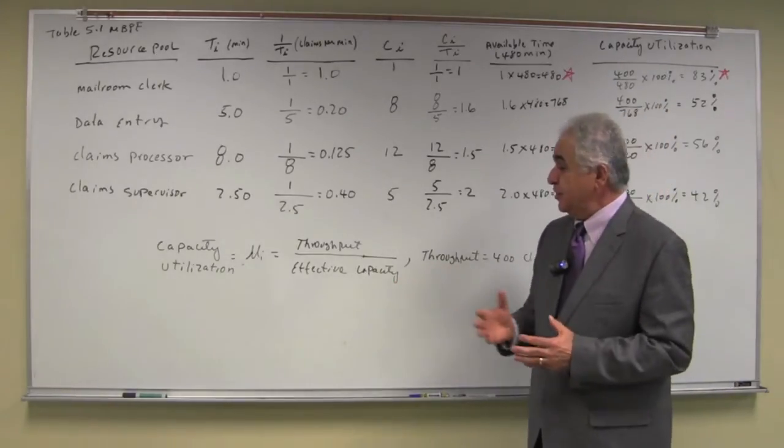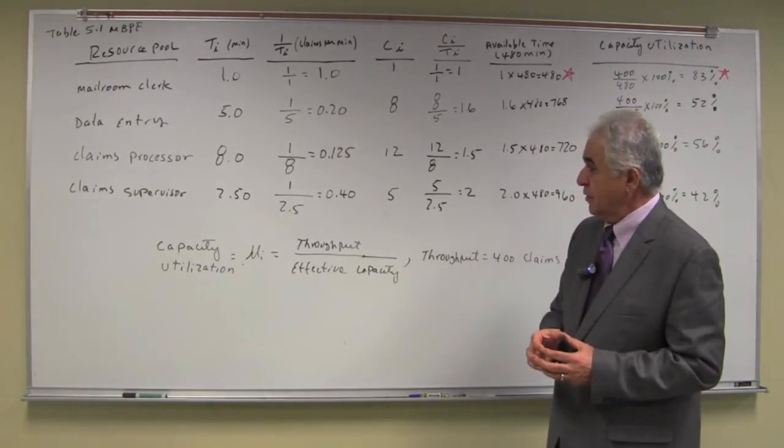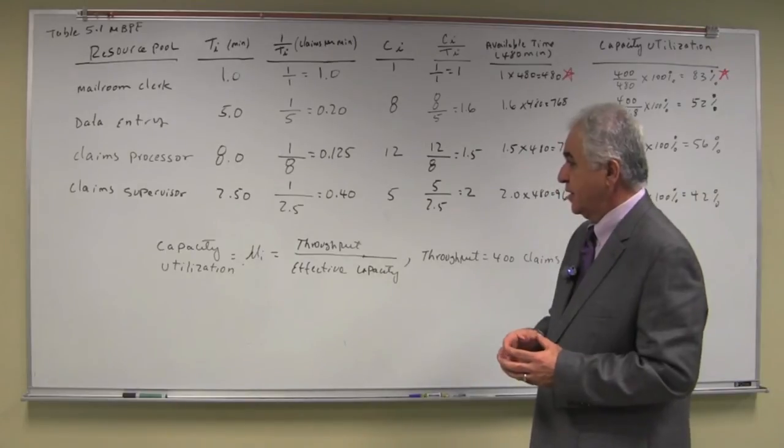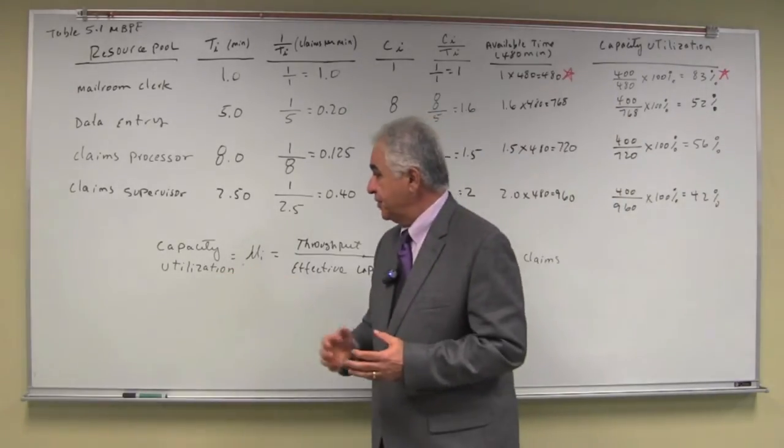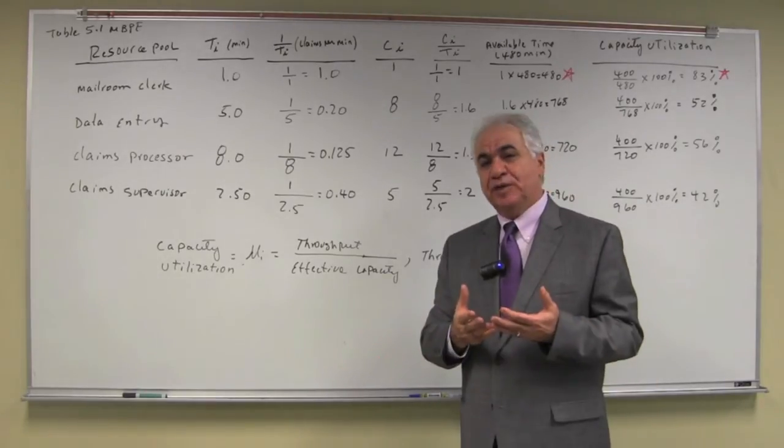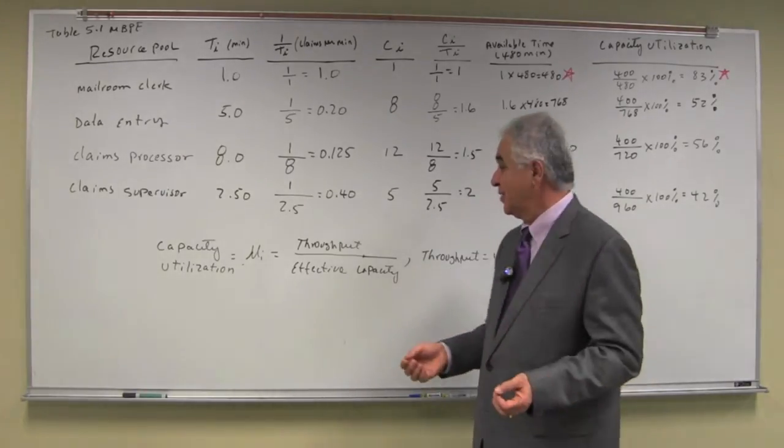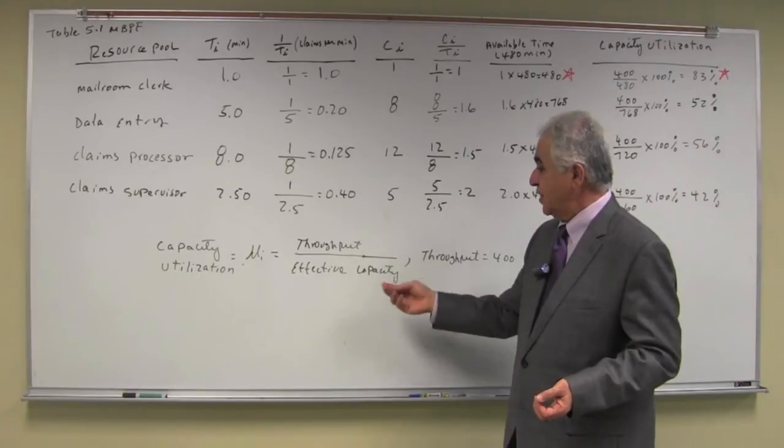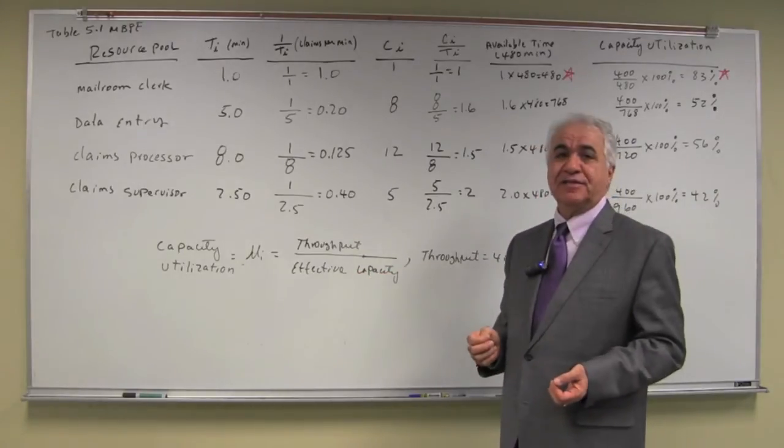We can find an additional characteristic of the process and that is to determine the capacity utilization. How effectively we utilize our resources, which is throughput of the process over effective capacity of the process.